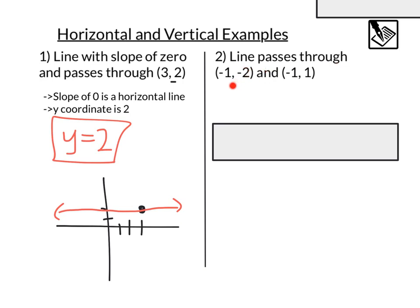Number two, a line that passes through negative 1, negative 2, and negative 1, 1.